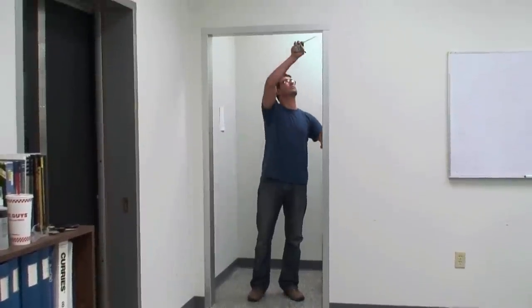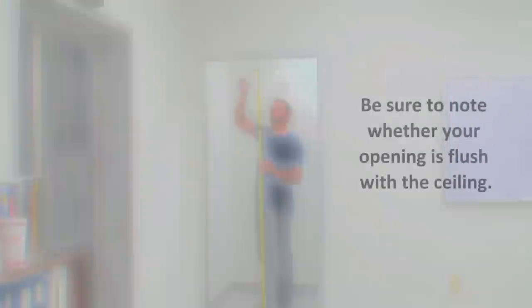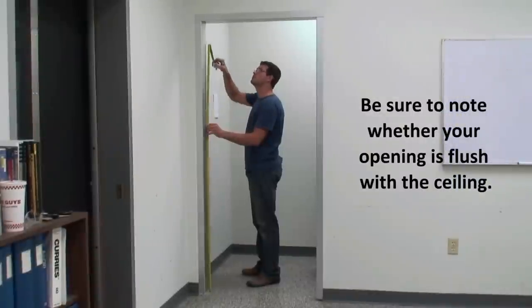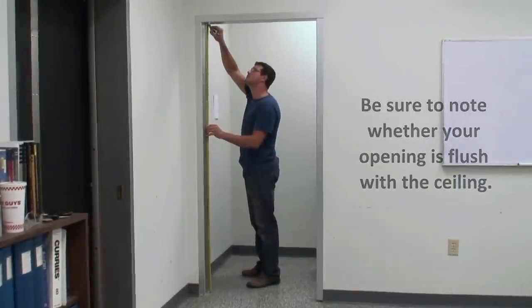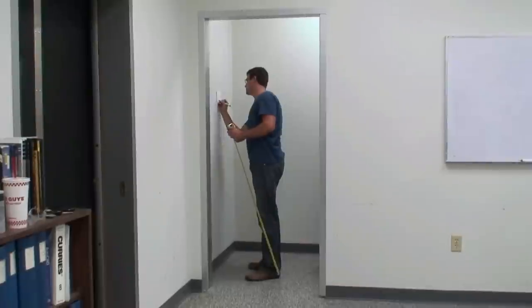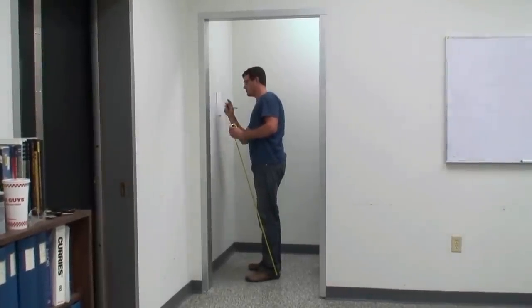Next, measure the height in three locations: each side plus the center. Again, use the smallest measurement as your final opening height.